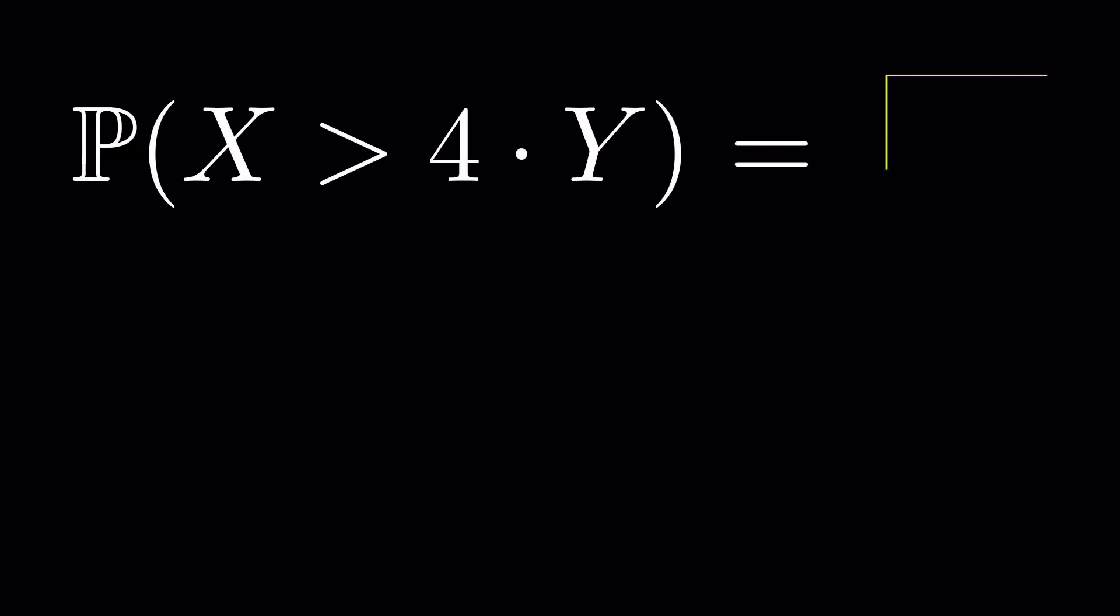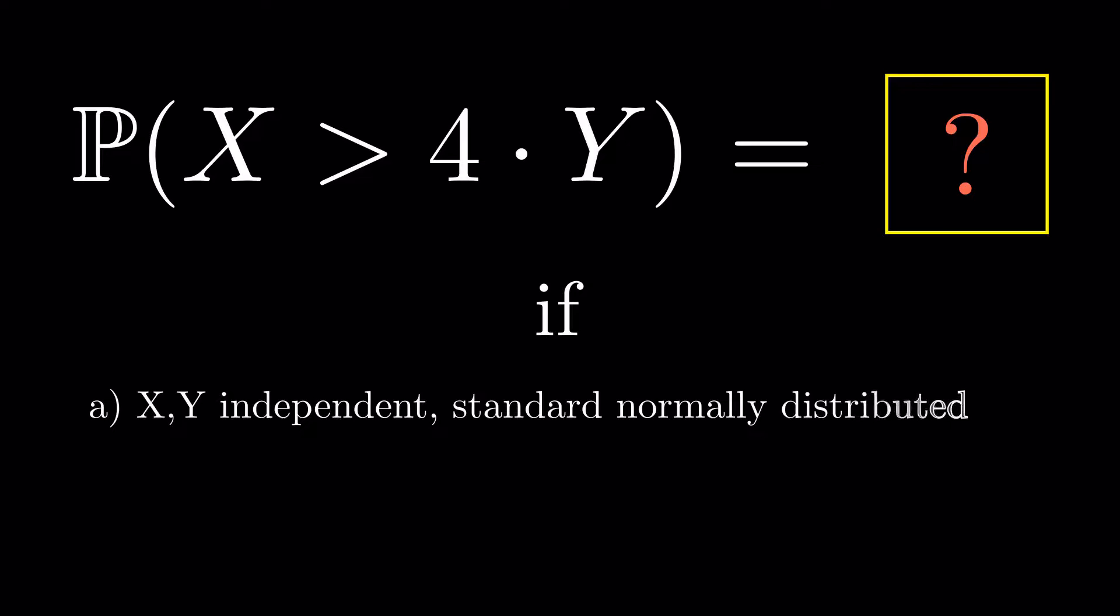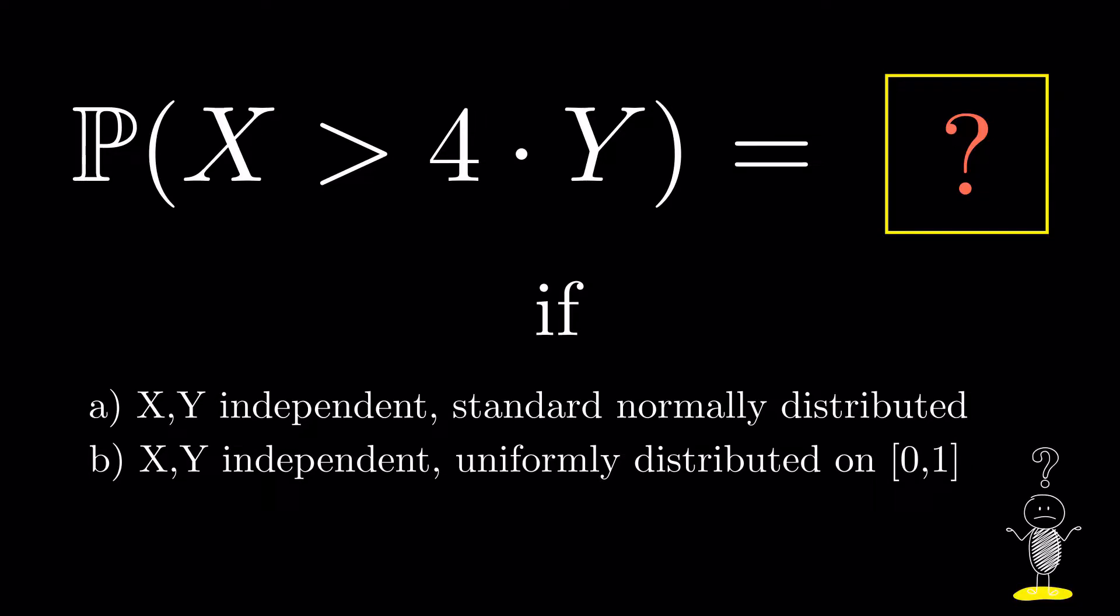What is the probability that X is greater than 4Y if X and Y are independent, standard normally distributed, and X and Y are independent, uniformly distributed on [0,1]? You should give each part of the question 5 minutes of thought and then you can watch the two solutions I have prepared for them.